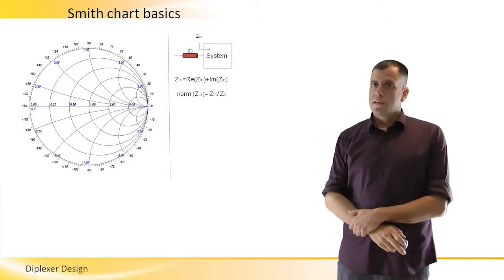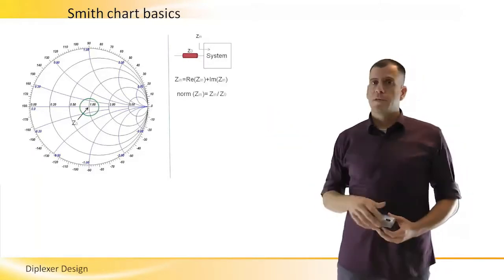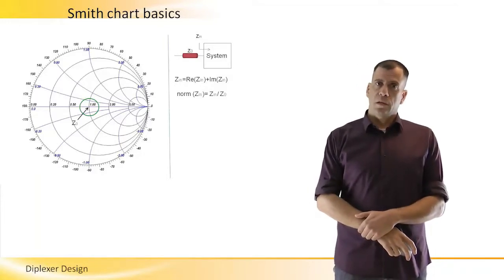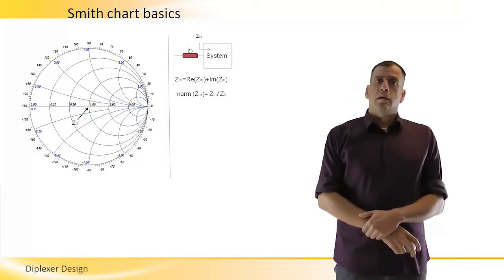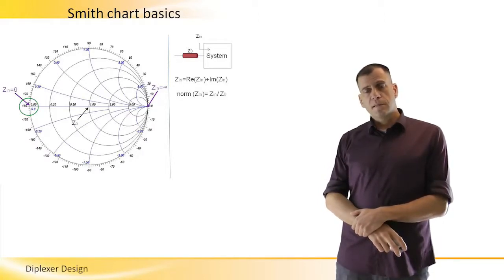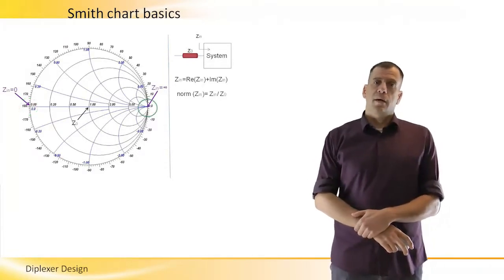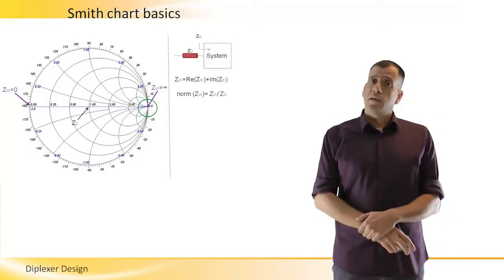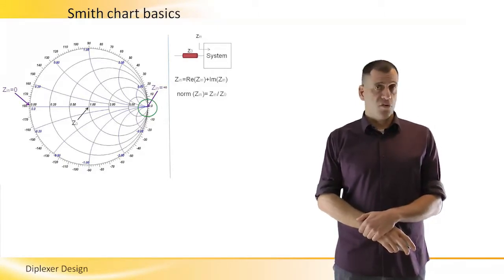Now regarding the Smith chart, the center point represents ZO. The left point marked here represents zero impedance, zero ohm impedance, as if our system is simply a short. The right point represents an infinite ohm impedance, as if we had an open circuit at the end of our transmission line.